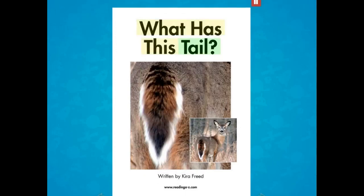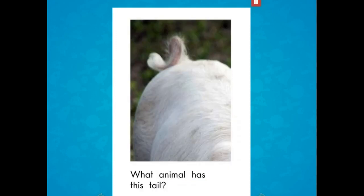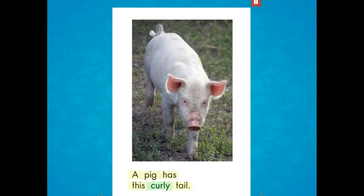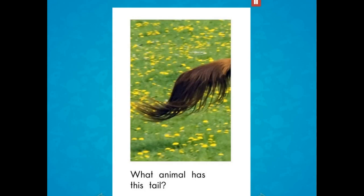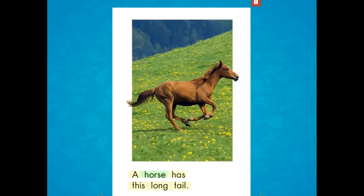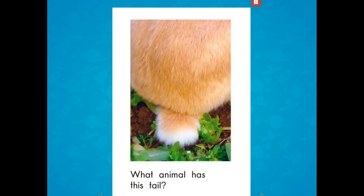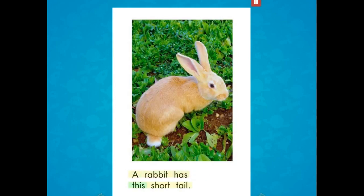What Has This Tail? Written by Kira Freed. What animal has this tail? A pig has this curly tail. What animal has this tail? A horse has this long tail. What animal has this tail? A rabbit has this short tail.